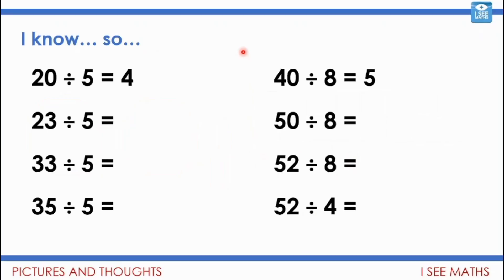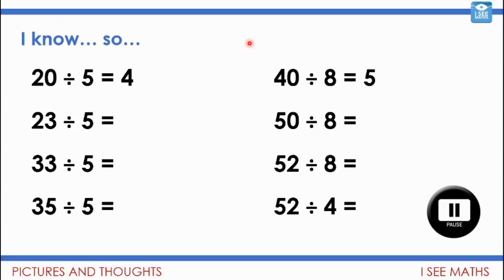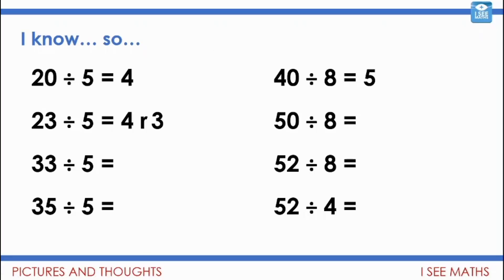Understanding this will help with 'I know so' questions. 20 divided by 5 equals 4 — how many fives in 20? There are four. That helps you answer the question below using what you know. Pause the video and see how the question above helps you work out the one below. So: 23 divided by 5 — it's the same as above but with three extra that don't make another whole five, so four remainder three.